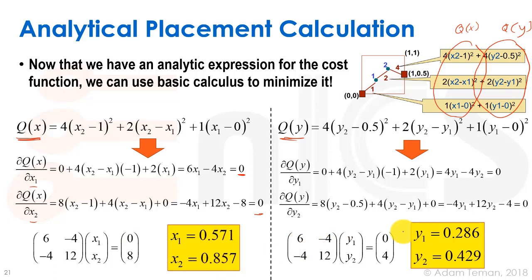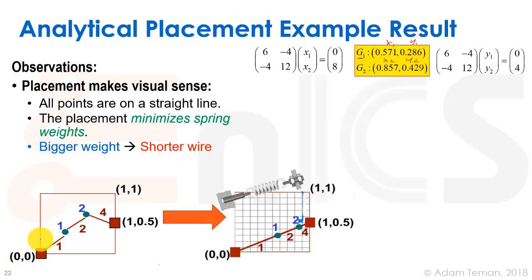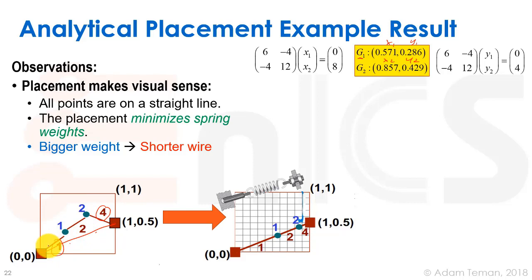Solving both linear systems gives us numerical values for x1, x2, y1, and y2. Looking at this solution, it makes strong visual sense. Since one pad pulls to one side and the other pulls to the other side, we'd expect the gates to lie on a straight line — and indeed the solution shows exactly that. We also see that the stronger-weight net produces a shorter wire length, while the weaker-weight connection yields a longer one. This is a good sanity check.